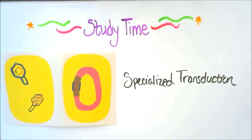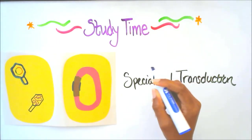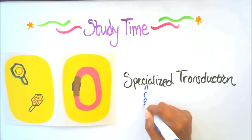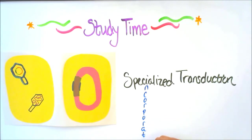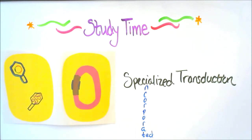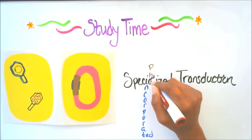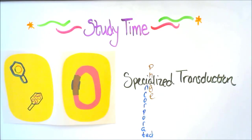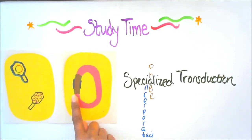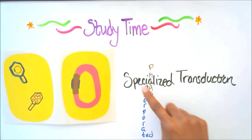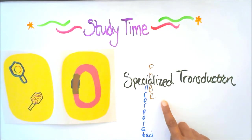Specialized transduction: viral DNA is incorporated into a bacterium's chromosome. We use the 'I' in specialized for incorporated. The viral DNA is incorporated into the bacterium's DNA by a specific phage — for example, lambda phage. We use the 'A' for phage. So specialized transduction: viral DNA is incorporated into the bacterium's chromosome by a specific phage, such as lambda.